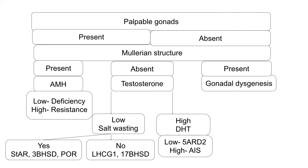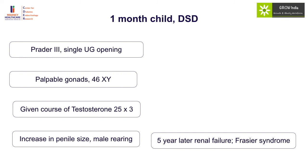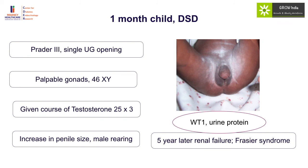Going back to our first case — the one-month-old child with Prader 3, XY DSD, who subsequently presented with Frazier syndrome — if we had looked into WT1 status and urine protein at the time, we could have identified this individual much earlier.